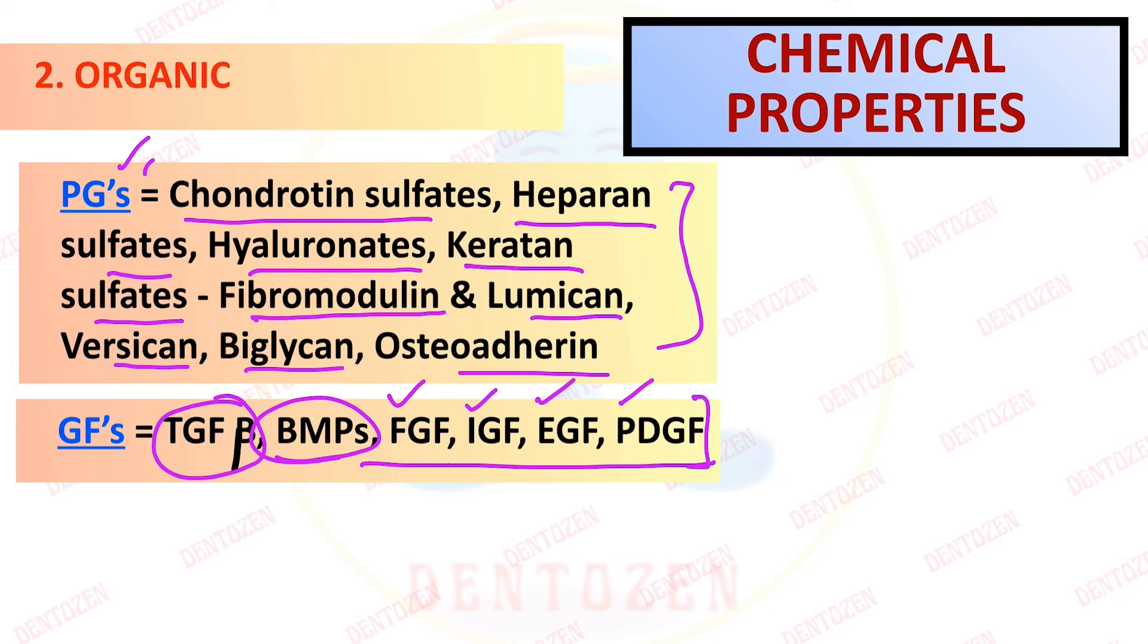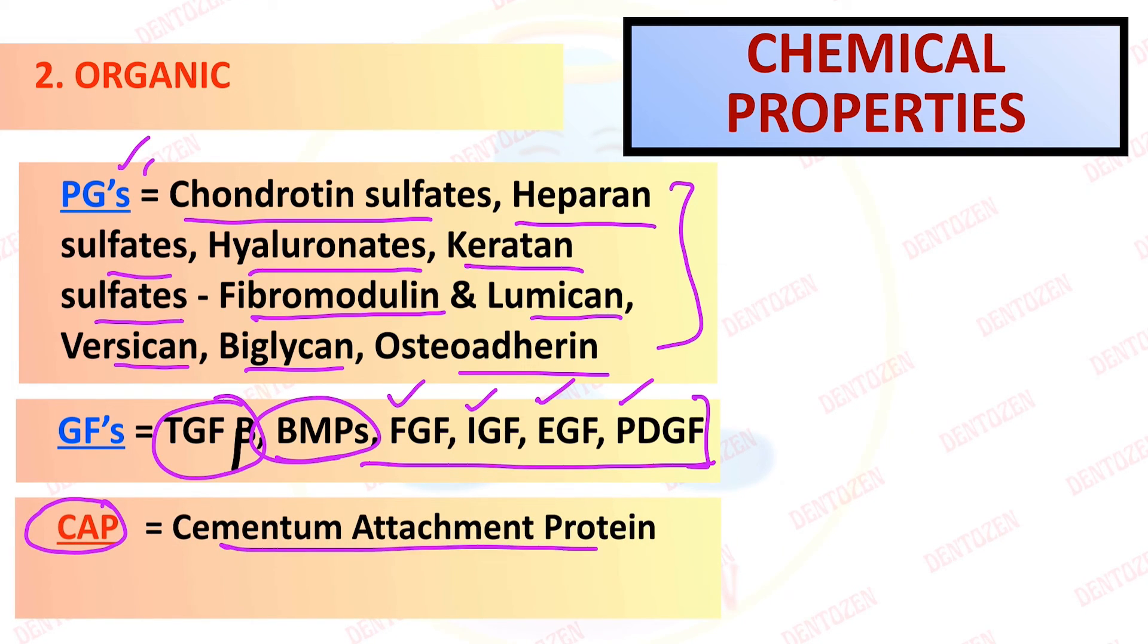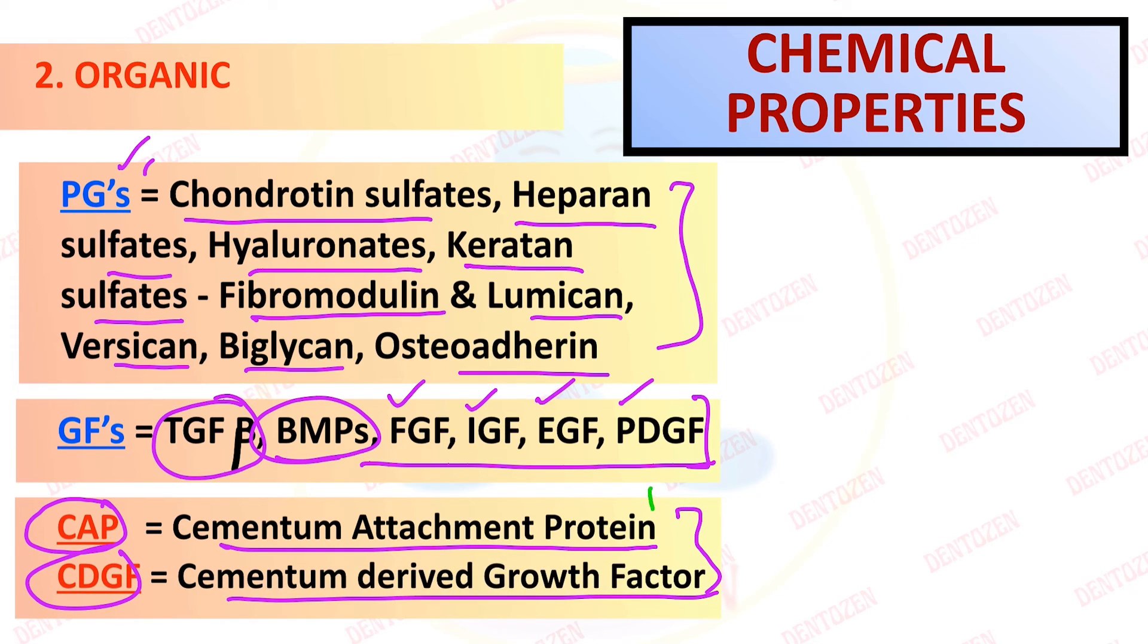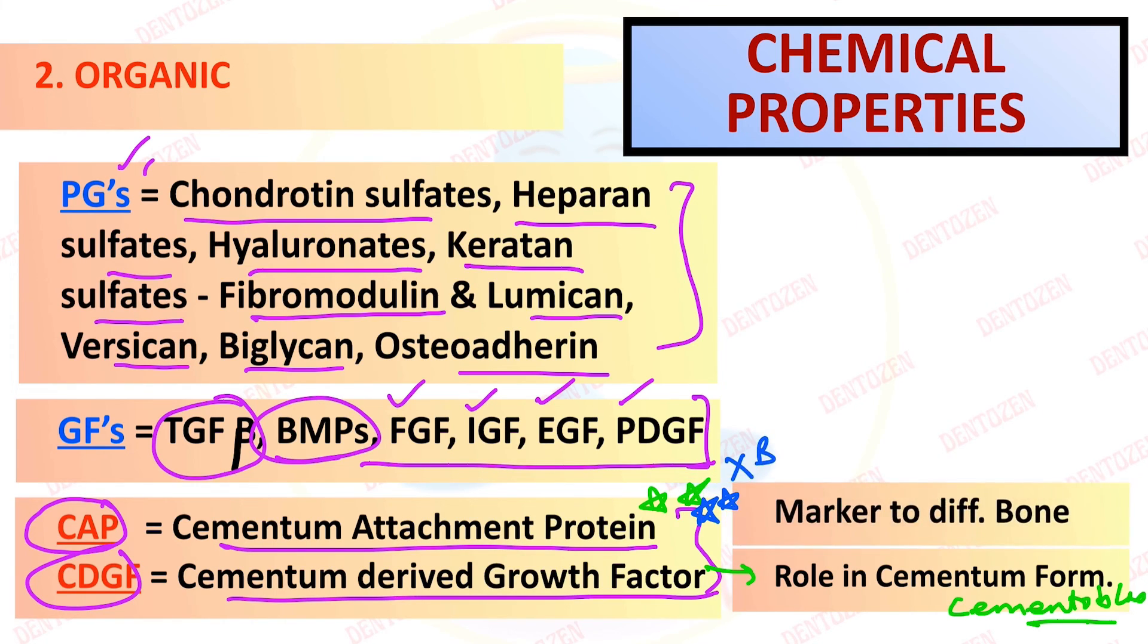But two important proteins which are unique to cementum are cementum attachment protein and cementum derived growth factor. These two are important and seen in cementum. What is their role? Their role is in the cementum formation. They help in the cementoblast addition, cementoblast cells. The cementum is made in cementum and cementum attachment protein because it is seen only in cementum and not in bone. So this acts as a marker to differentiate cementum from bone.